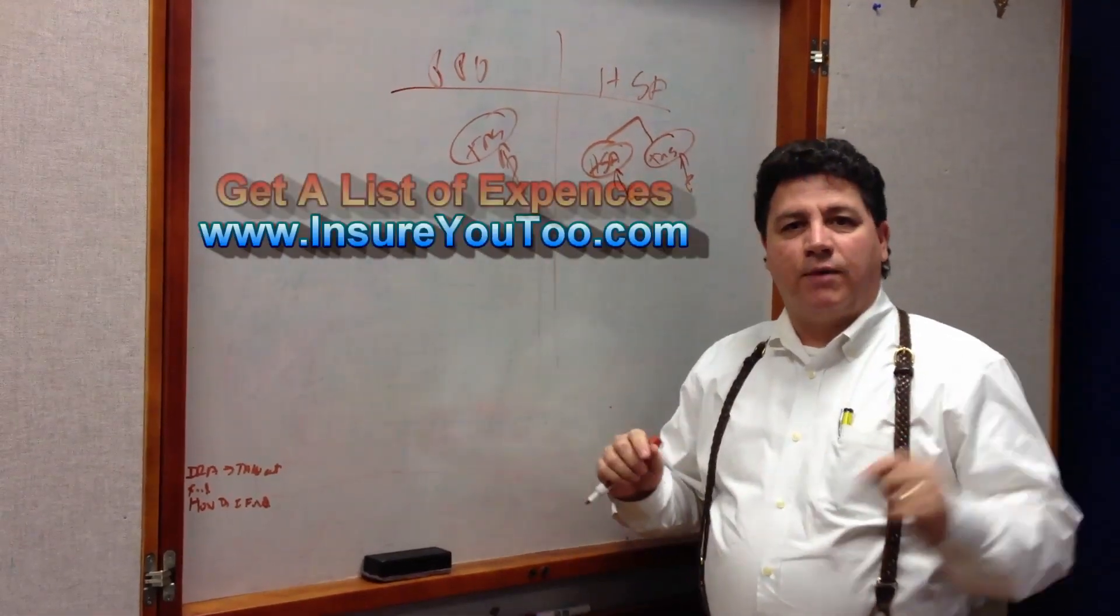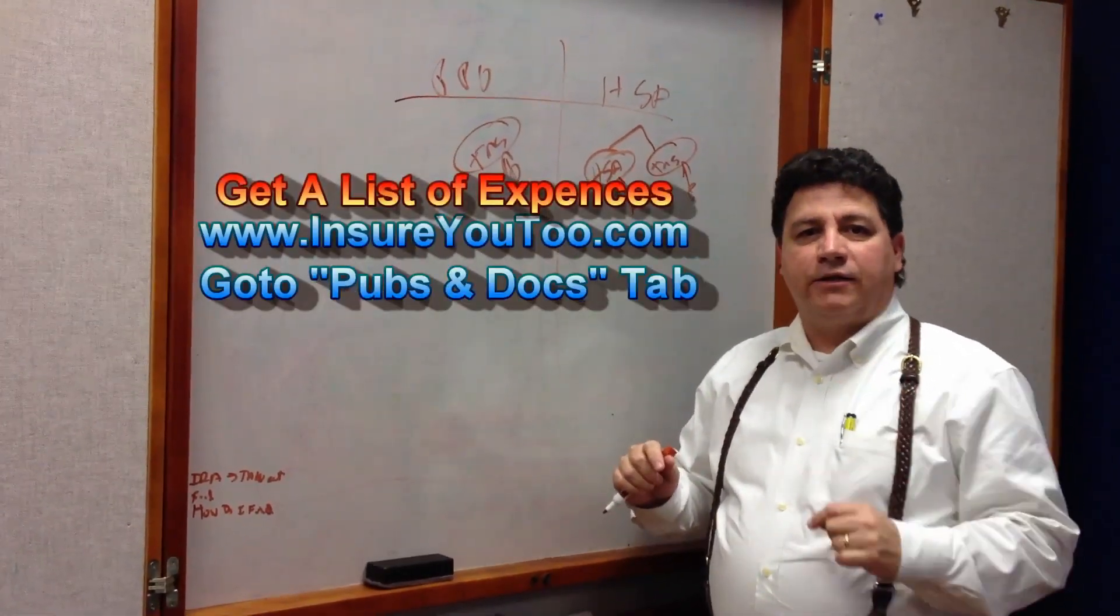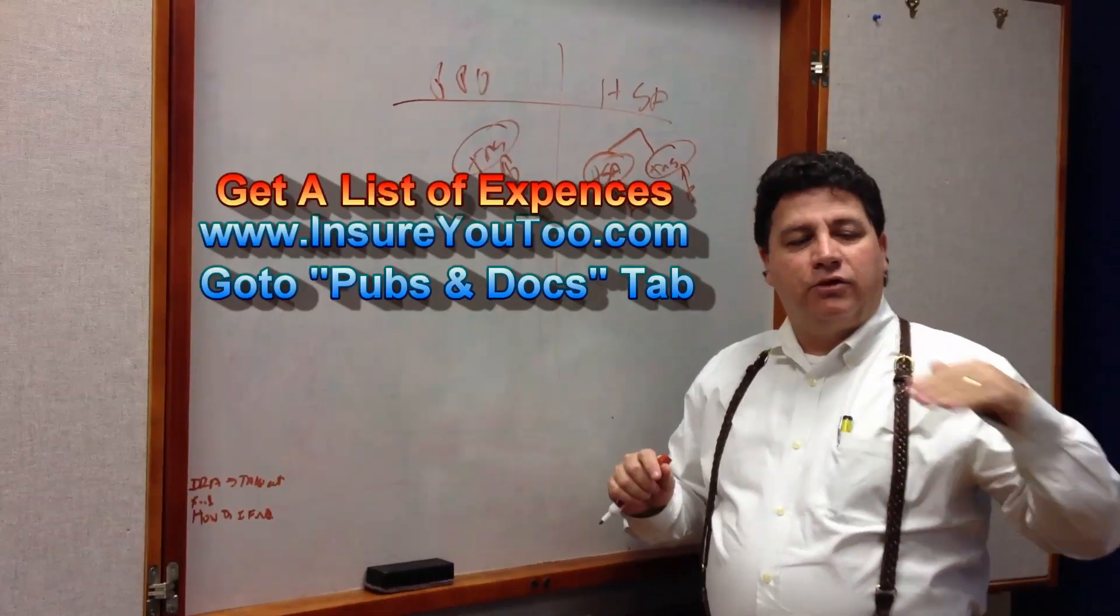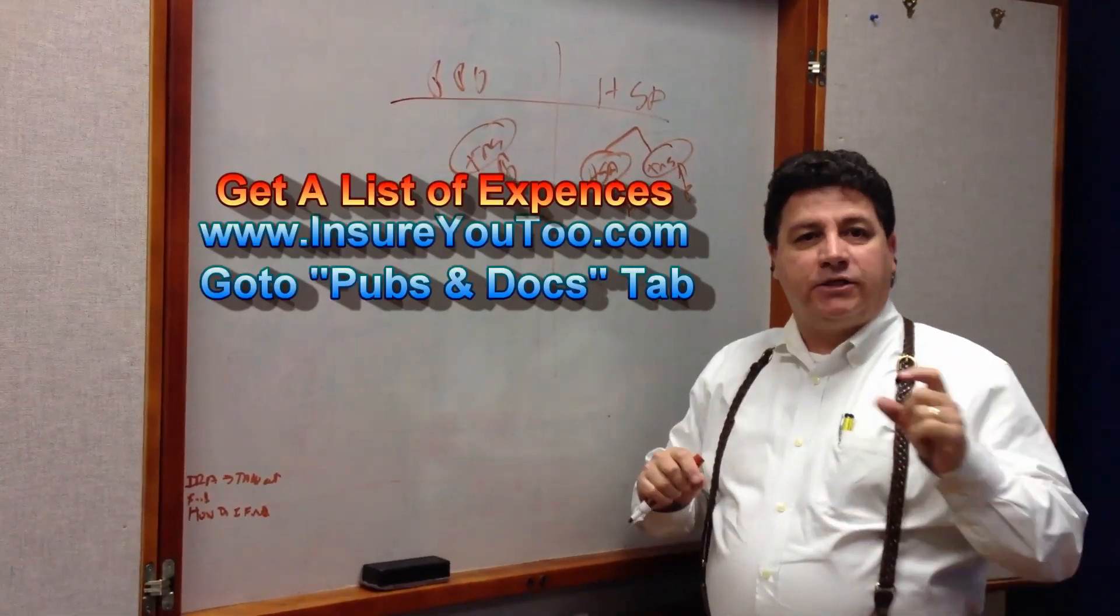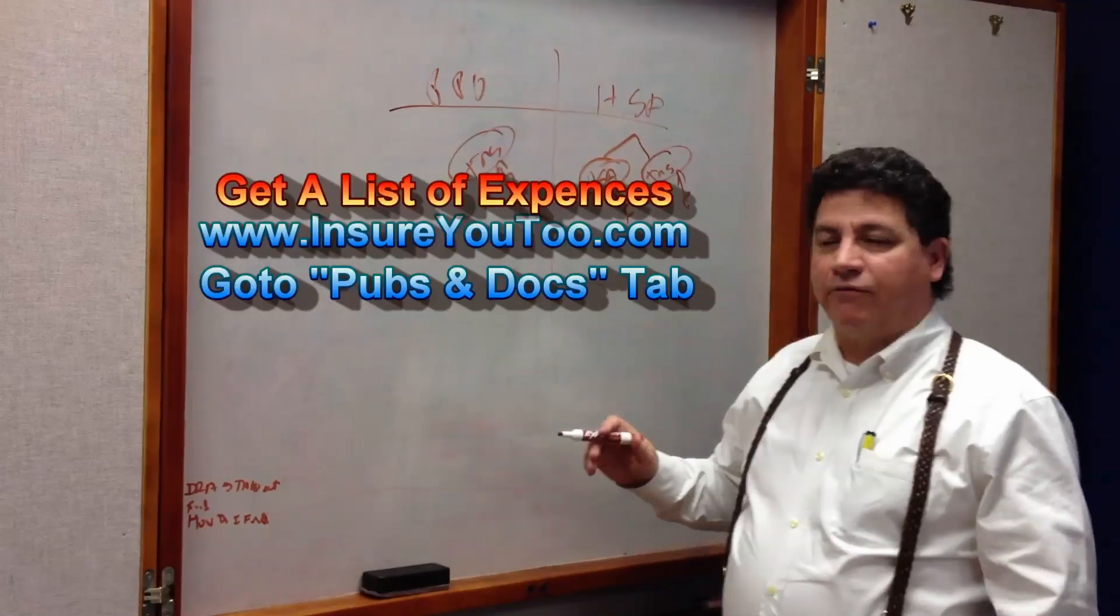You can get a nice list of this by going to our website, insureyou2.com, clicking on the Documents and Publications section, and you can download the HSA expense list. It gives you an idea of what you can take out for.